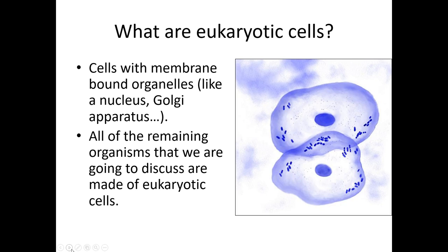Everything from protists through plants, animals, and fungi that we're going to talk about later — they're all made out of eukaryotic cells. These are different from the prokaryotic cells that bacteria and archaeans were made out of because we have membrane-bound organelles. The one that's really obvious is the nucleus, but this includes all those other organelles like rough ER, smooth ER, Golgi apparatus, and mitochondria. Those are all membrane-bound, so if you have a relatively large cell with at least a nucleus in it, it's going to be a eukaryotic cell.